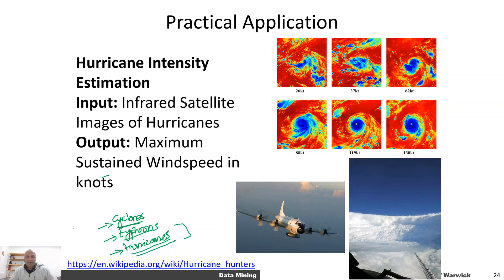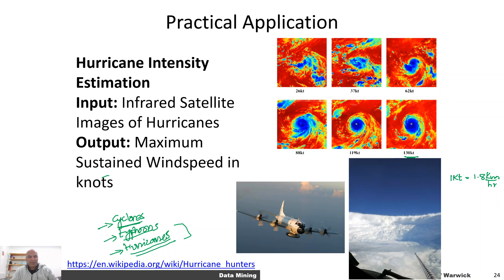Hurricanes are massive storm systems that can cause a lot of damage to objects on land as well as at sea, because the wind speeds within them are really fast. We can have wind speeds of about 130 to 150 knots — one knot equals about 1.8 kilometers per hour — so up to around 300 kilometers per hour. That is actually how we measure the intensity of a hurricane, and even when these hurricanes hit land the damage can be in the billions of dollars every year.